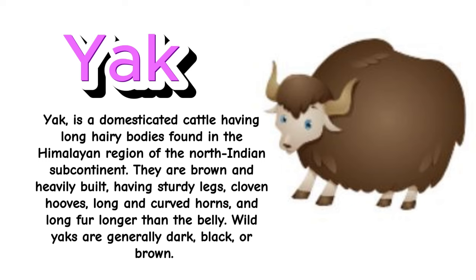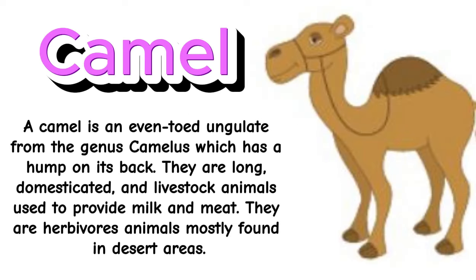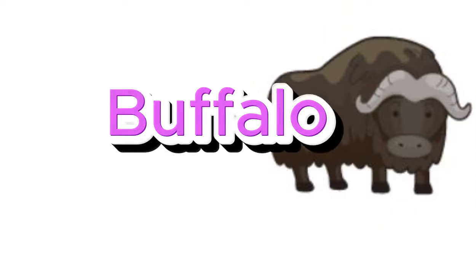Camel. A camel is an even-toed ungulate from the genus Camelus, which has a hump on its back. They are large, domesticated livestock animals used to provide milk and meat. They are herbivorous animals mostly found in desert areas.